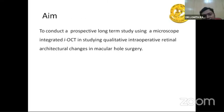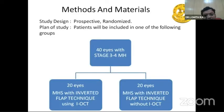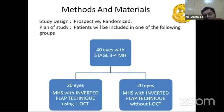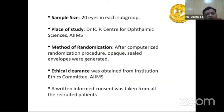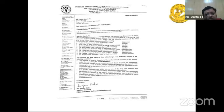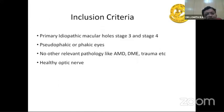Our aim is to find out the qualitative changes in retinal architecture in macular hole surgery. Methodology: this is a prospective randomized trial with 40 eyes taken at stage 3 and stage 4. Out of 40, 20 eyes used intraoperative OCT with the inverted flap technique, and 20 eyes used the conventional microscope without iOCT. Ethical clearance was obtained. Inclusion criteria: only primary idiopathic macular holes stage 3 and stage 4 were included, and pathologies like AMD were excluded.